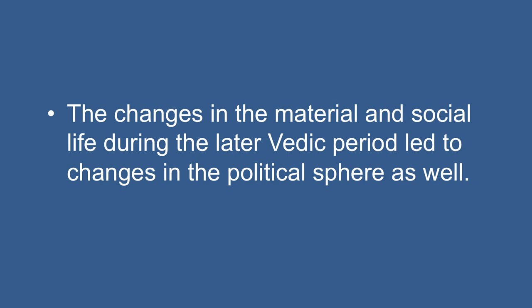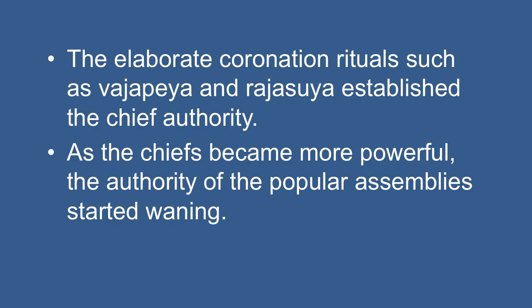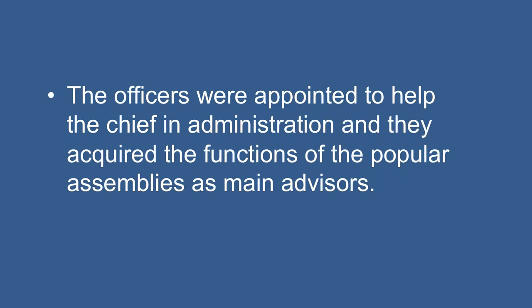These situations changed during the later Vedic phase. Changes in material and social life led to changes in the political sphere as well. The nature of chiefship changed — the territorial idea gained ground. The people started to lose control over the chief and popular assemblies gradually disappeared. The chiefship had become hereditary. The idea of the divine nature of kingship gets a mention in the literature of this period. The Brahmins helped the chief in this process. Elaborate coronation rituals such as Vajapeya and Rajasuya established the chief's authority. As the chief became more powerful, the authority of popular assemblies started waning. Officers were appointed to help the chief in administration.